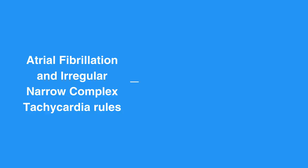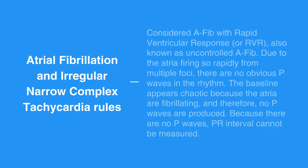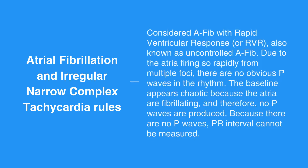If the ventricular rate is more than 100, it is considered AFib with rapid ventricular response, or RVR, also known as uncontrolled AFib. Due to the atria firing so rapidly from multiple foci, there are no obvious P waves in the rhythm. The baseline appears chaotic because the atria are fibrillating, and therefore no P waves are produced.